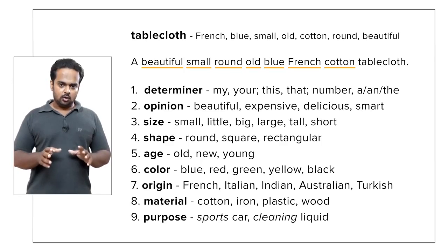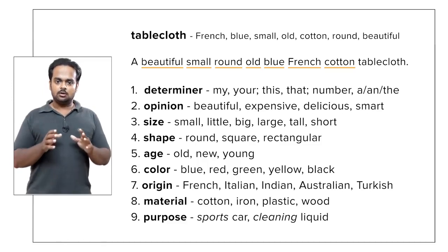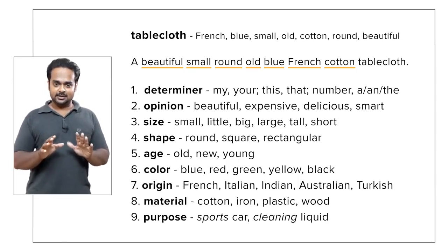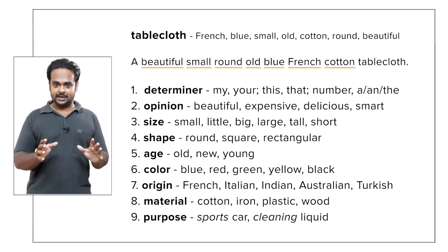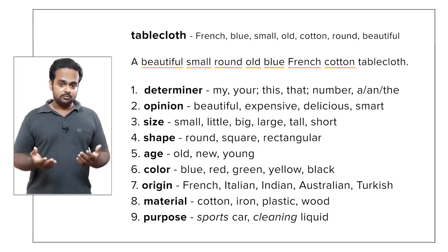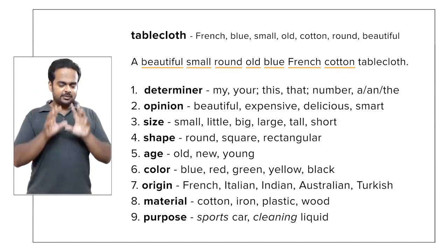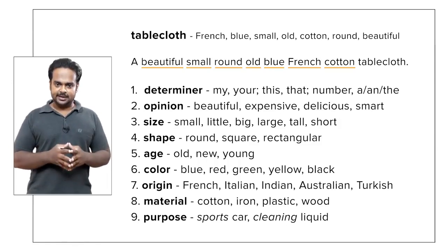So the final order of adjectives here is: in my home I have a beautiful, small, round, old, blue, French, cotton tablecloth. Now, it's not very common to have so many adjectives in one sentence — it's too much information for your listener. But this example was just to show you how we order adjectives in English.